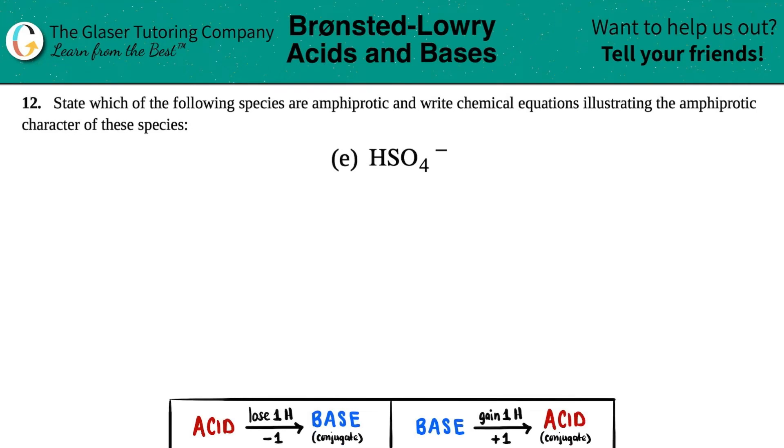Number 12: State which of the following species are amphiprotic and write chemical equations illustrating the amphiprotic character of these species. We have letter E out of the bunch, so we need to just find out if HSO4- is amphiprotic.